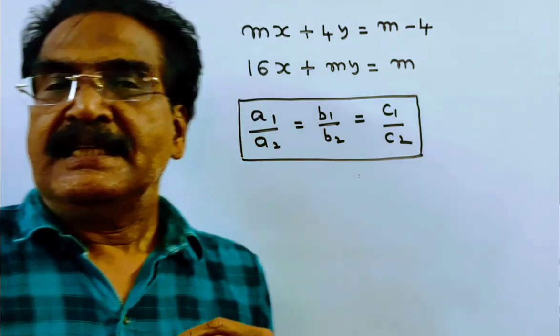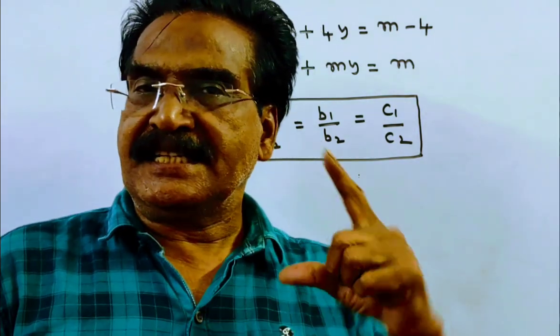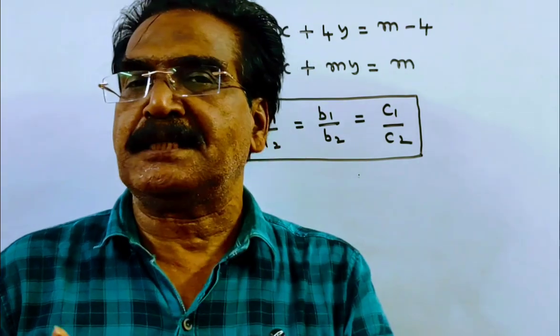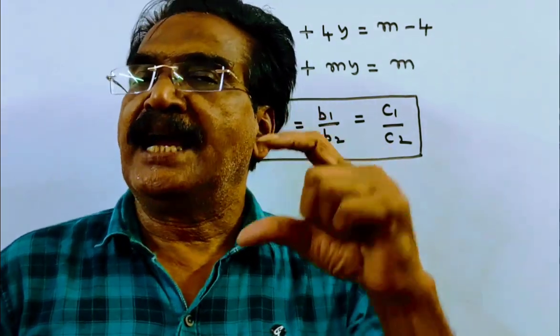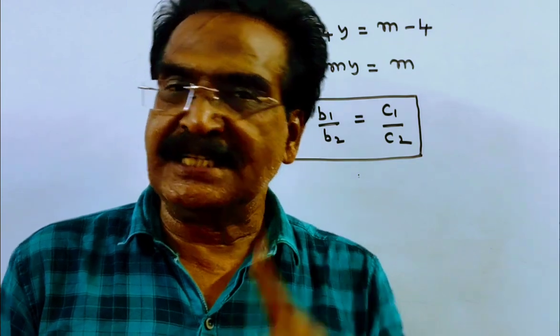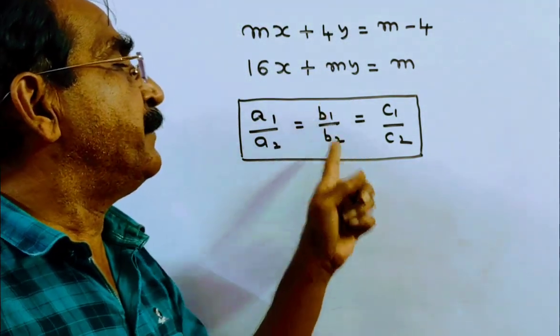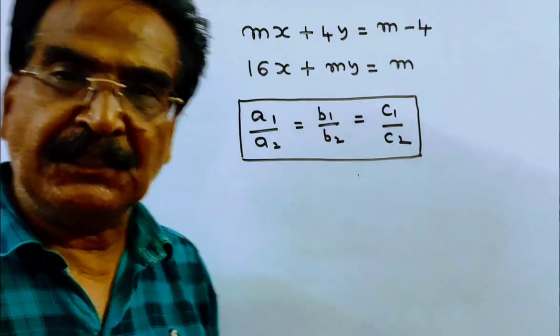Friends, the system of linear equations a1x plus b1y plus c1 equals 0 and a2x plus b2y plus c2 equals 0 will have an infinite number of solutions if a1 by a2 is equal to b1 by b2 is equal to c1 by c2.